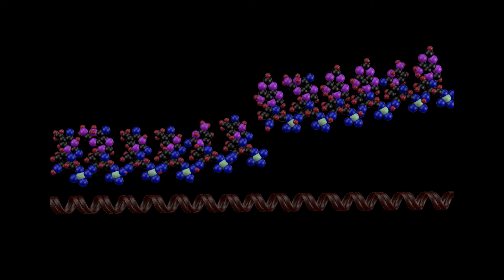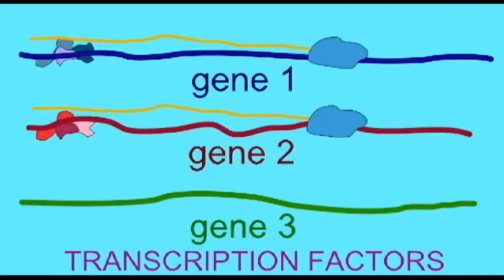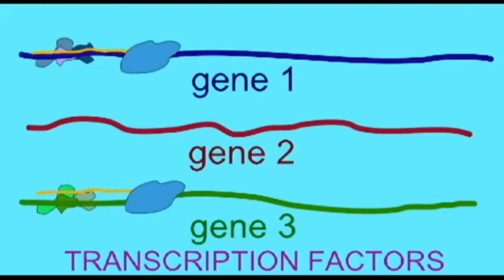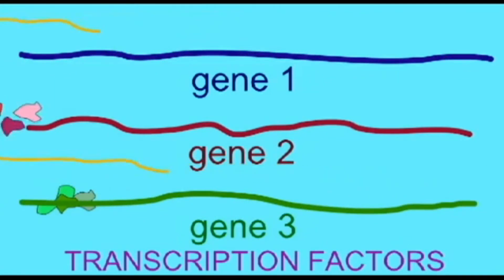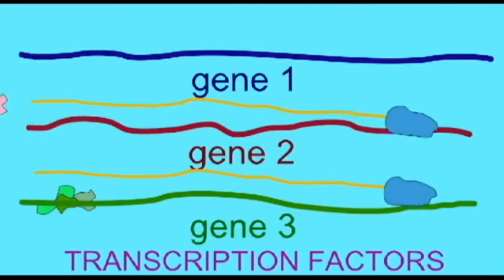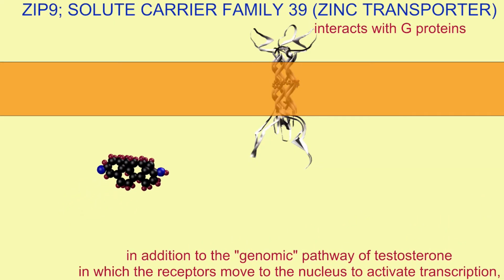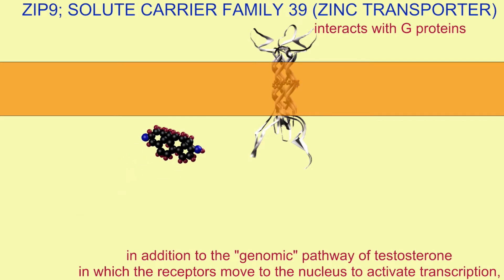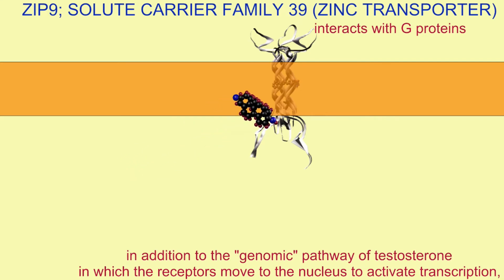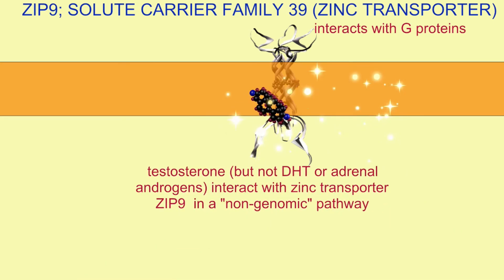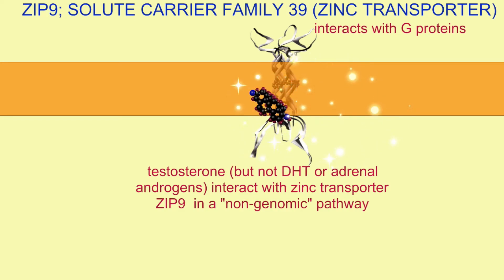In addition to binding androgen receptors that move to the nucleus to change gene transcription — known as the genomic pathway of testosterone action — testosterone, but interestingly not DHT or adrenal androgens, can also interact with a protein in the cell membrane: a zinc transporter known as ZYP9. This is known as the non-genomic pathway because it does not involve binding to DNA.